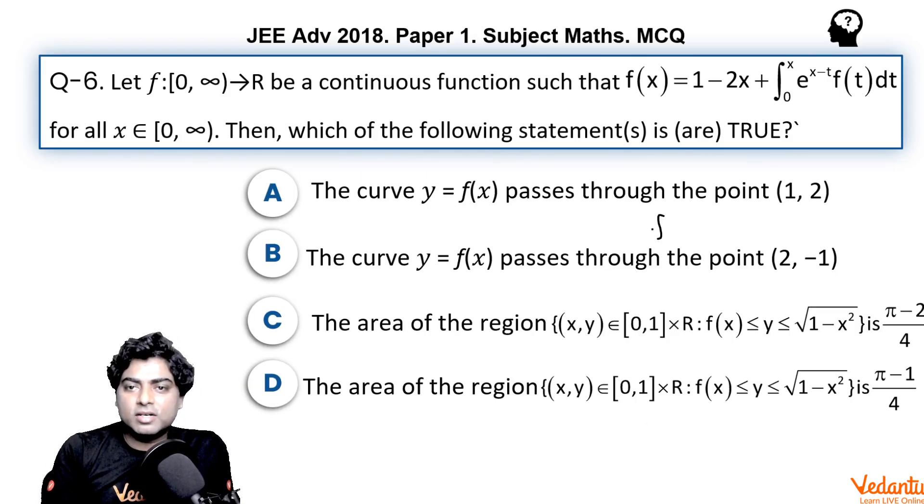Coming to options A and B, so f(x) we got as 1 - x. By putting x = 1 you'll get f(x) as 0, but here it is given 2, it's not correct. By putting x = 2 you'll get f(x) as -1, so it is passing through (2, -1), option B is correct, option A is wrong.